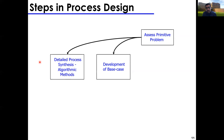Once you have your base case, you proceed to detailed process synthesis using algorithmic methods. This involves checking temperatures and pressures of all streams, verifying no thermodynamic violations (e.g., chemicals beyond their critical point), and identifying optimization opportunities. Towards the end of the semester we'll cover this in depth — developing heat exchange networks will be a major part of the course.